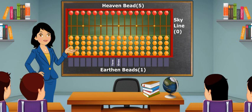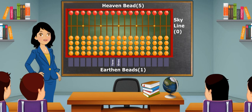When the earthen and the heaven beads do not touch the skyline, it shows number 0 on the abacus. The value of one earthen bead is equal to 1,